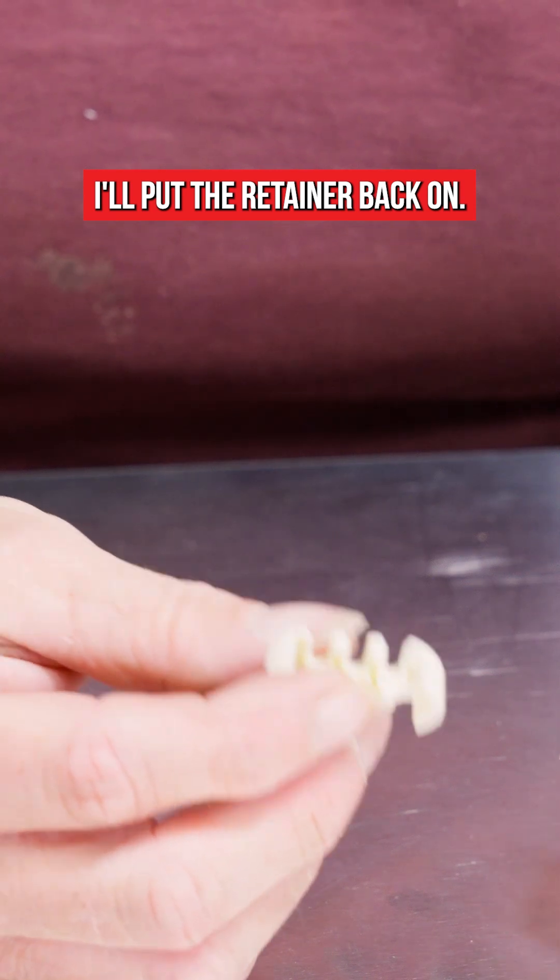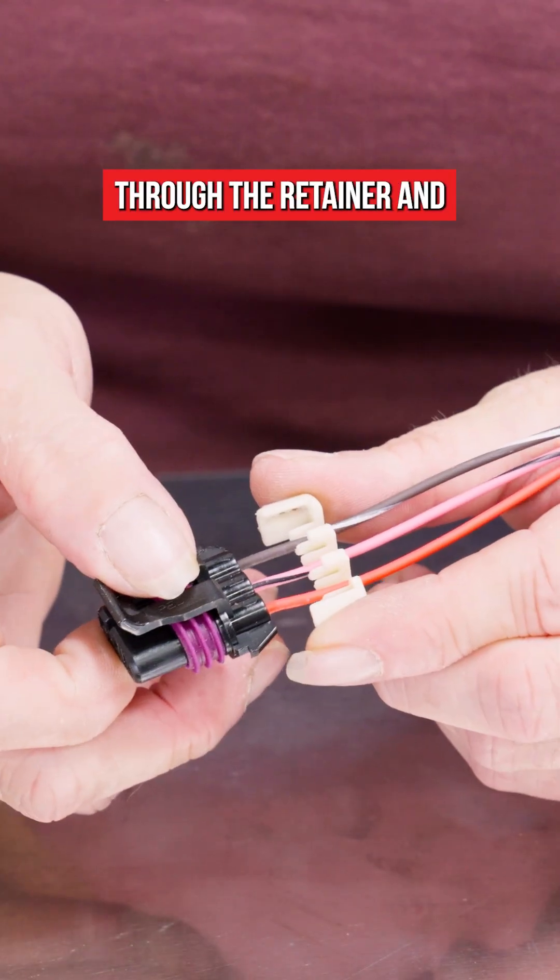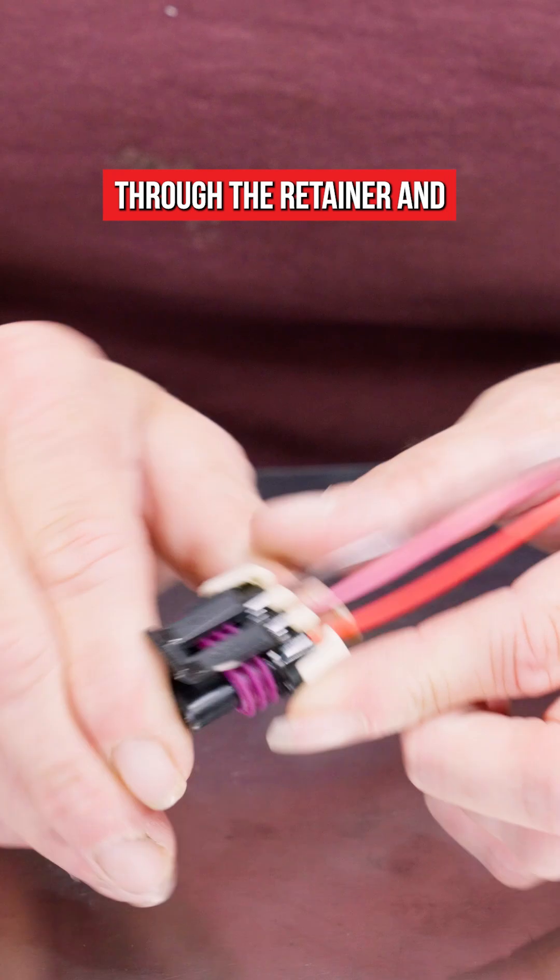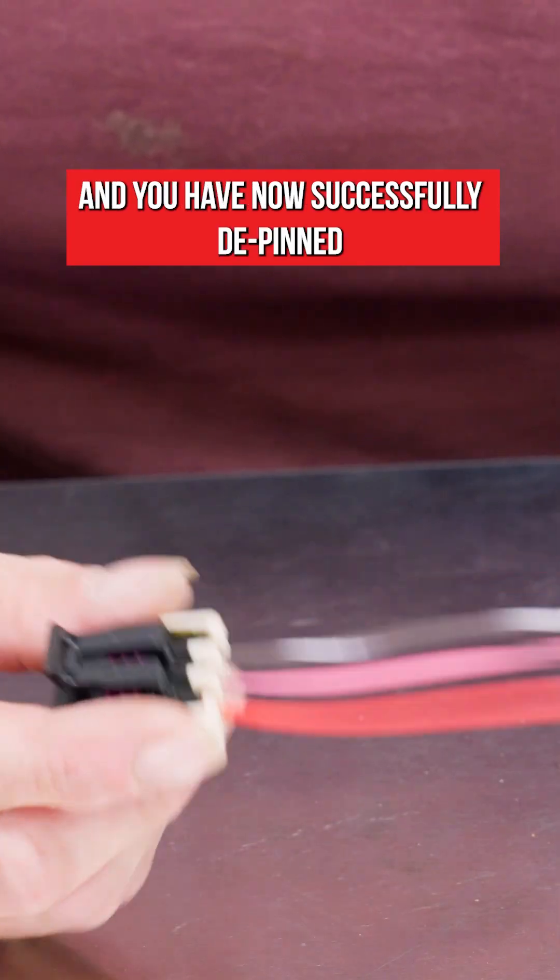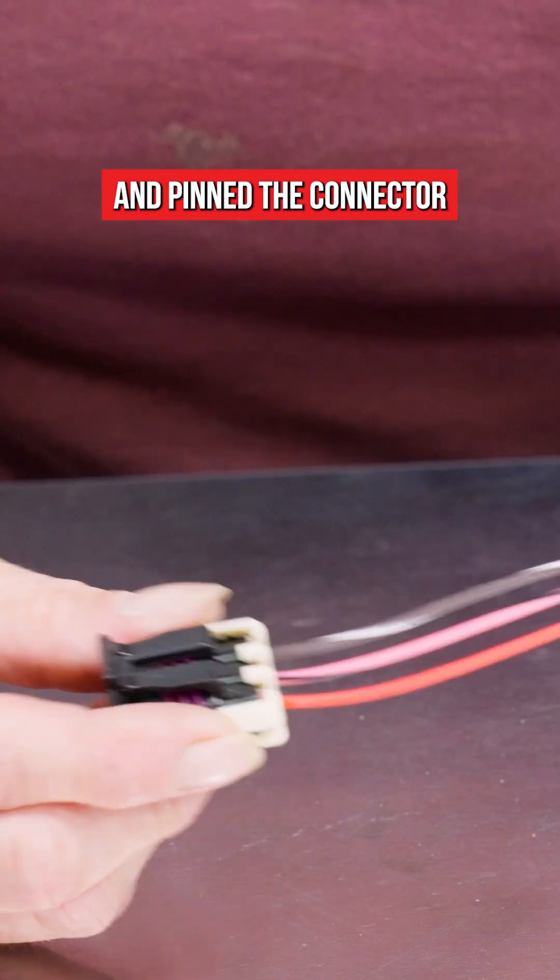I'll put the retainer back on. Okay slide our wires through the retainer and click on each side. Now it's locked and secured and you have now successfully de-pinned and pinned the connector.